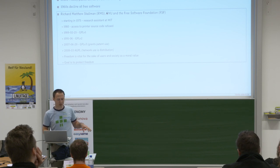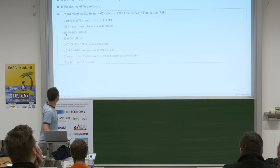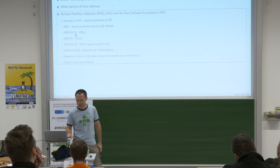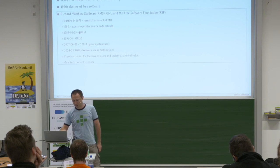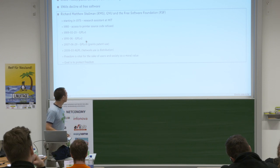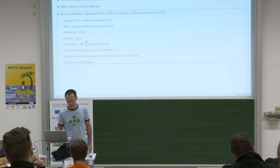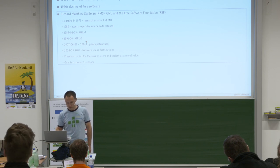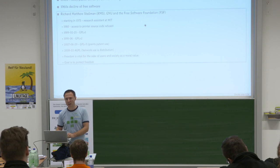Stallman comes from a social background. Licenses, just like software programs, have versions. The first version of the GNU General Public License was created in 1989 — pretty early for software licenses. Version 2, which is the most common, was created in 1991. They're still a work in progress: in 2007 came GPL version 3, in 2008 the AGPL and so on. The goal is to protect freedom — that's number one, and it really is a moral value.